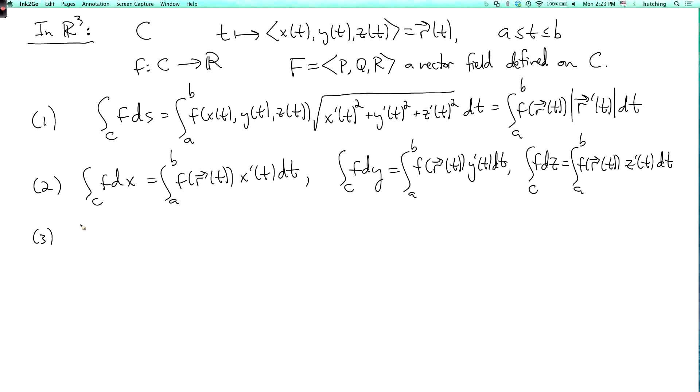And third, we can integrate the vector field F dot dr. So this is the integral from a to b of F(R(t)) dot R'(t) dt. Or if we expand this out, we recognize that this is the integral over C of P dx plus Q dy plus R dz.